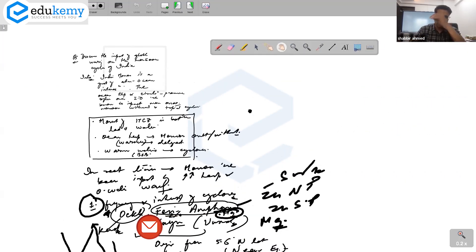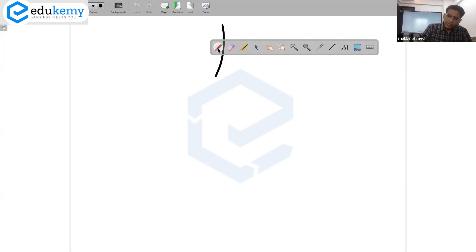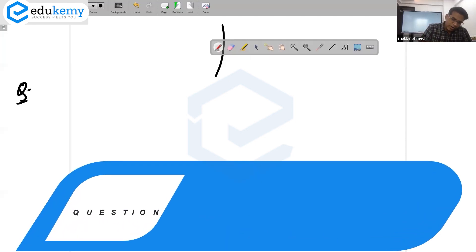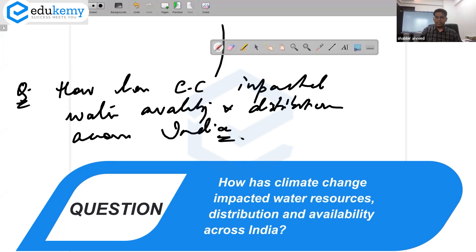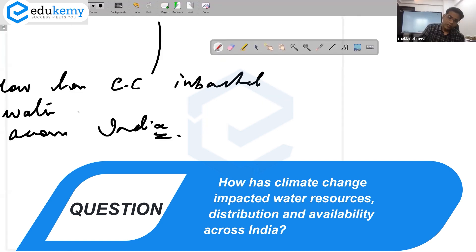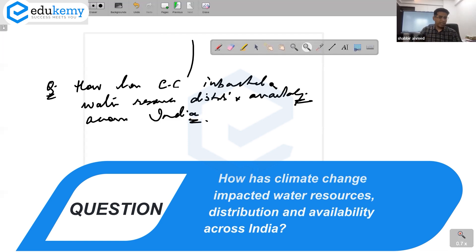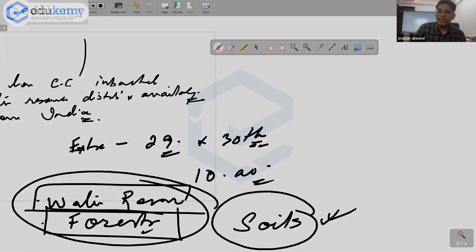It also includes the weather phenomena related to the western disturbances and pre-monsoon showers. When you say monsoon rhythm, it is not just the rainy season. This takes care of this question. The question can also be on how has climate change impacted water availability and distribution of water resources across India. So think on this question, and then we can discuss it.